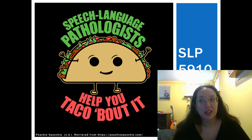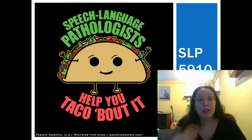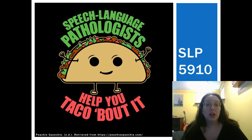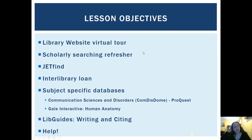Hi, I'm Susie, one of the librarians. Welcome to a rather unusual lesson. I'm going to encourage everybody to have a piece of paper and a pen by their side, so that if you have any questions while going through the lesson, you can jot them down and email them to me. I want this to be interactive. Today we'll start with a virtual tour of the library website, then go through a basic scholarly searching refresher. We'll talk about the JetFind box, Interlibrary Loan, subject specific databases — specifically CommDisc Dome and Gale Interactive Human Anatomy — some LibGuides, and where you can go for extra help.